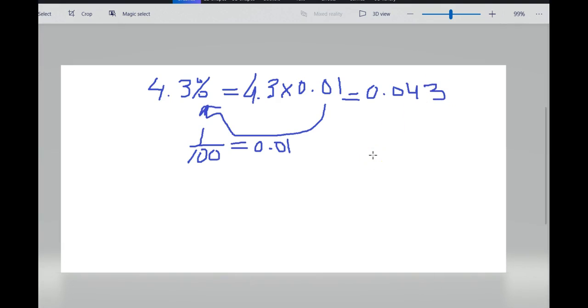Remember that you can also leave this as a fraction. To leave this as a fraction we're gonna take the number 4.3, multiply just like we did before by 1 over the 100. To make it easier in our calculations we can do 4 and 3 tenths times 1 over the 100. This equals 43 over 10.